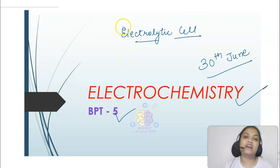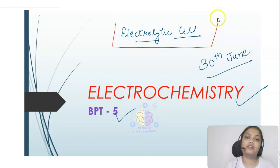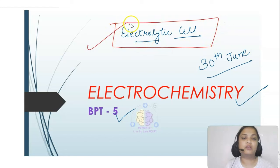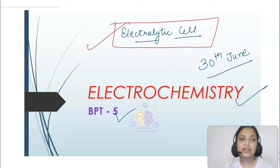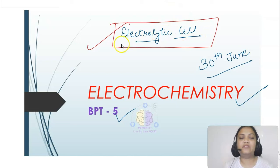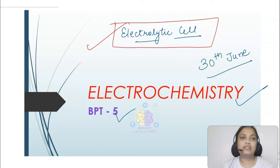We have already studied about electrochemical cells. Today we will be talking about the electrolytic cell and electrolysis, and then the different types of batteries. So only two topics are left that I will be covering in today's session. Let us start with the first topic: electrolytic cell and electrolysis.